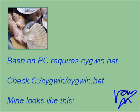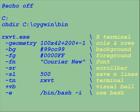Bash on PC requires you to edit Cygwin.bat in your Cygwin home directory. My Cygwin.bat looks like this. The most important thing is the X virtual terminal. Make sure you have arguments that set up your preferences as you want, and the last line specifies Bash.